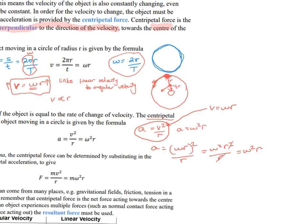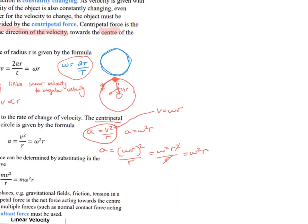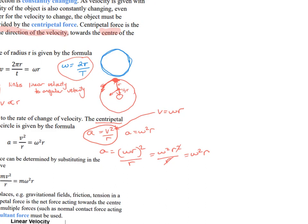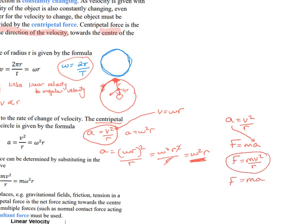For centripetal force, since F = ma and centripetal acceleration is v²/r, we get F = mv²/r. Alternatively, substituting a = ω²r gives F = mω²r. These are two expressions for centripetal force depending on whether linear or angular velocity is known.